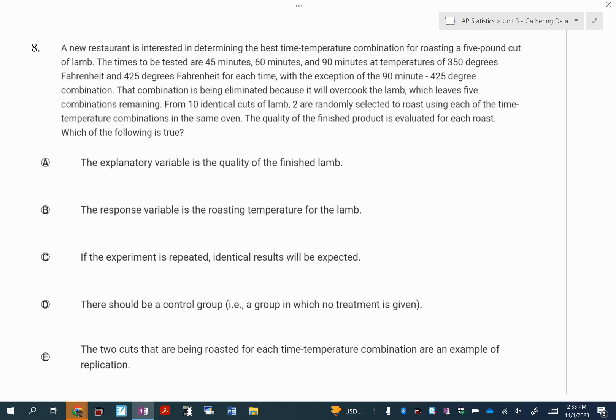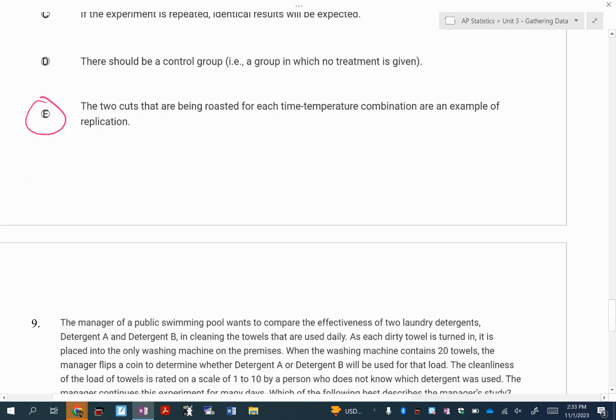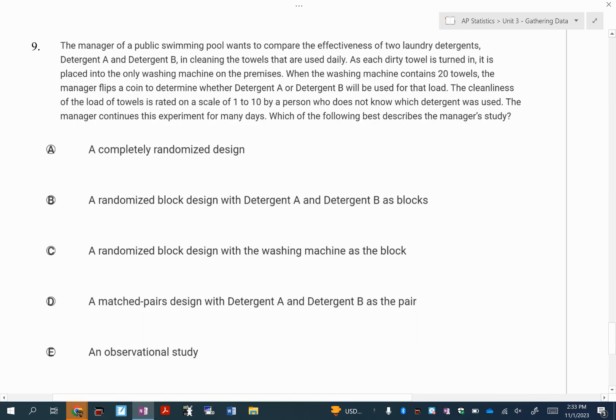If you repeat the experiment, you can never really expect identical results. I'd expect similar results but not identical. That would mean exactly the same. Control group here doesn't really make sense. I don't think I want to compare this to a raw cut of lamb, so I don't need to worry about that one. Ultimately here, it comes down to that by having those two cuts roasted at each time temperature combo, this is an example of replication.